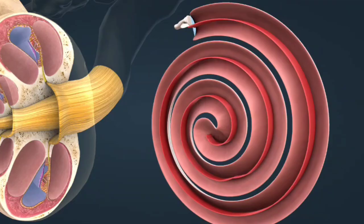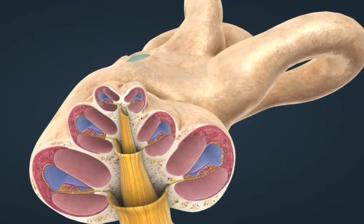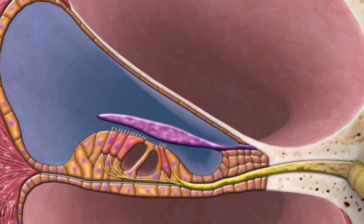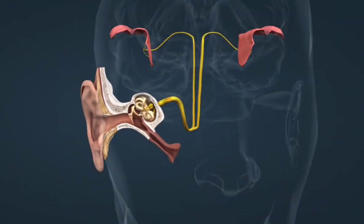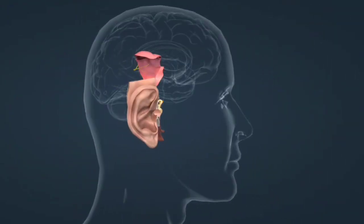Vibrations from the stapes create waves in the cochlear fluid. These waves move the basilar membrane, which is lined with sensory hair cells. Hair cells are tuned to specific frequencies. Movement of these cells generates electrical signals.